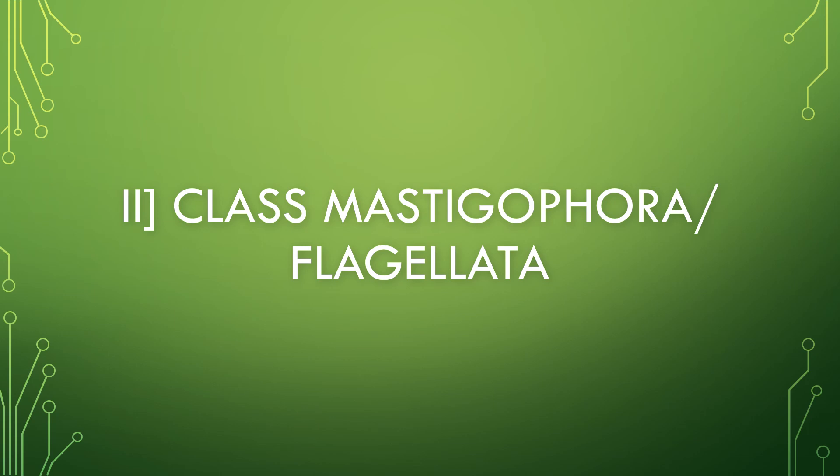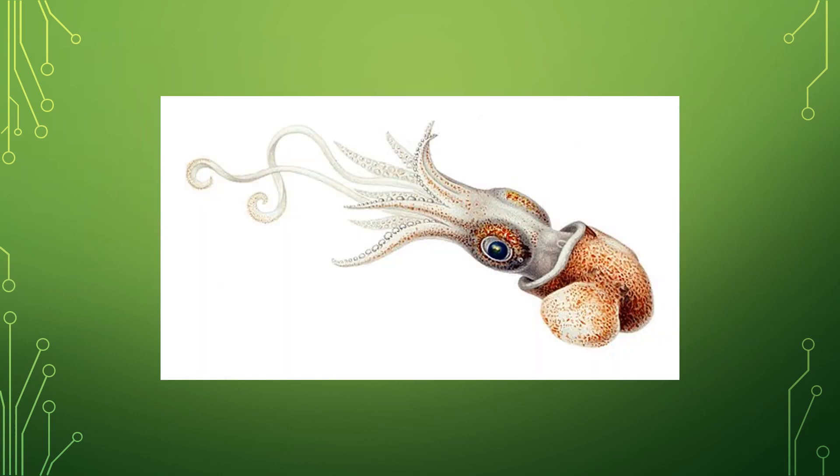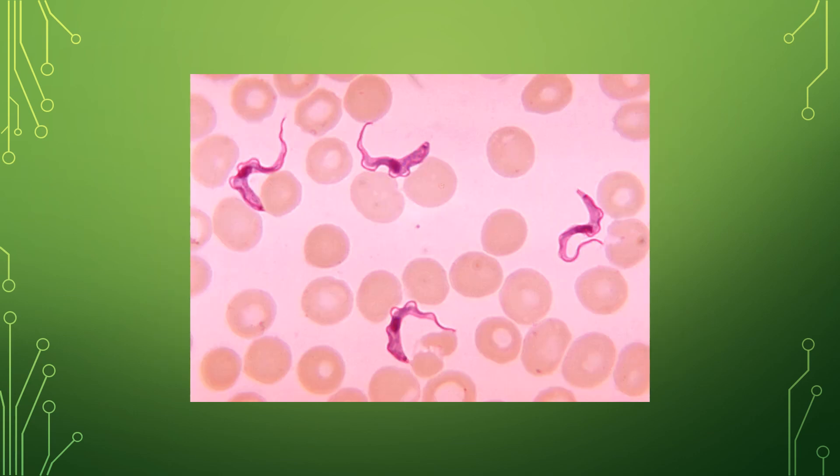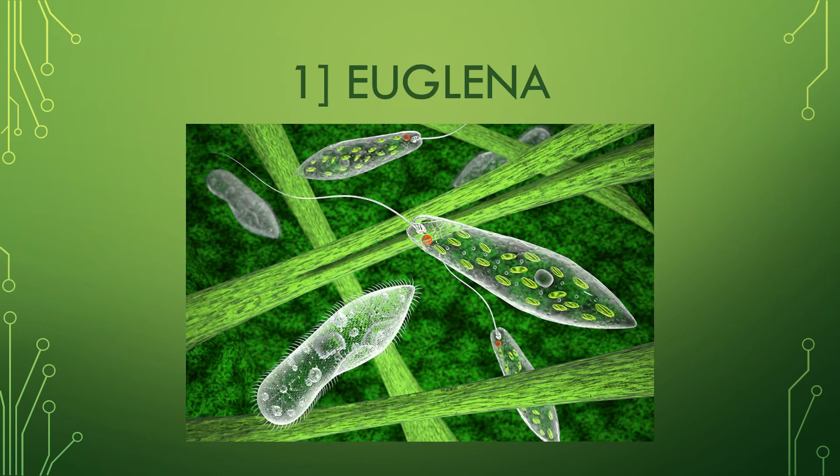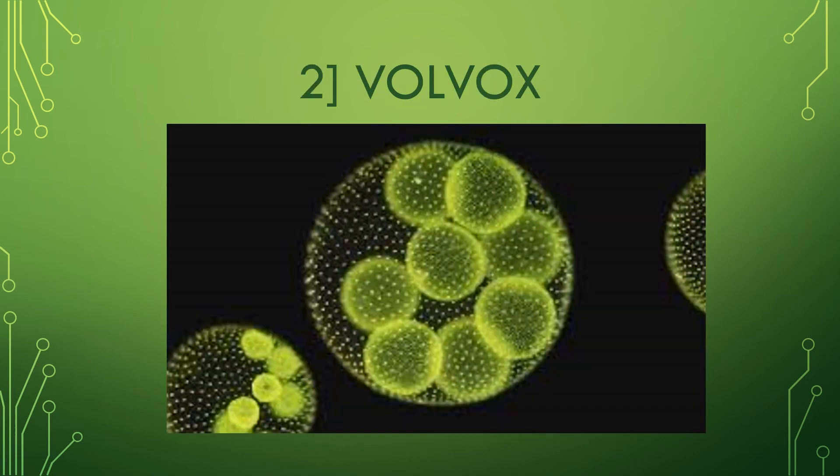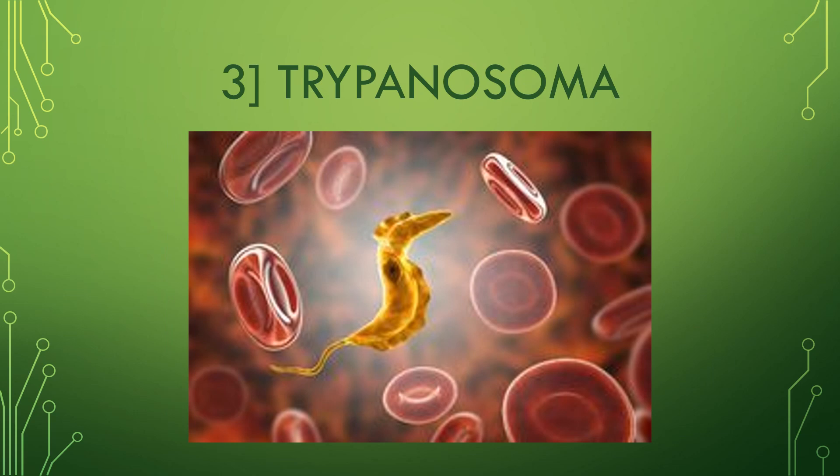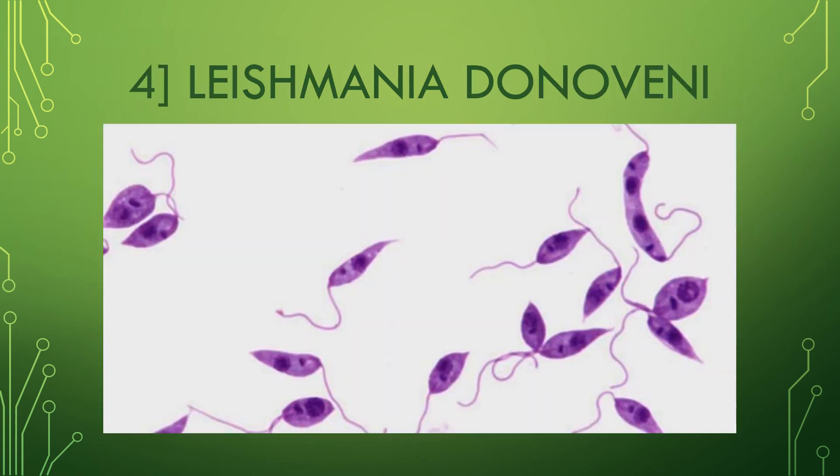The second class is Mastigophora or Flagellata. The following are their characteristics: Locomotory organ is thread-like flagella. The contractile vacuole is present for osmoregulation. Their asexual reproduction is by binary fission and cyst formation. Sexual reproduction is absent in them. Examples include Euglena, Volvox, Trypanosoma, and Leishmania donovani.